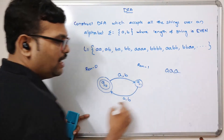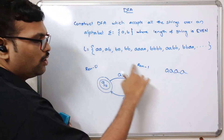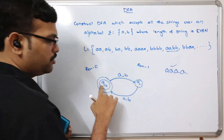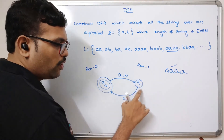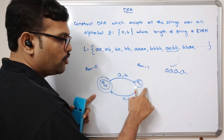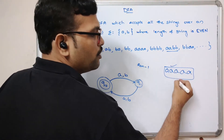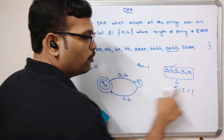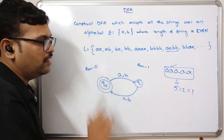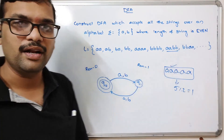Tracing examples: 'aa' — q0→q1→q0 (final, length 2, accepted). 'aaa' — q0→q1→q0→q1 (not final, length 3, rejected). 'aabb' — alternates back to q0, accepted. For five a's: 5 mod 2 = 1, ends at q1, rejected. This correctly accepts all even-length strings.